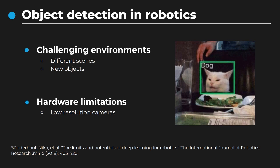Robots, due to hardware space limitations and the requirement to run in real-time, usually cannot use high-resolution cameras, which are not the standard in benchmark datasets. All these factors put constraints on the deployment of deep learning in robotics and require a new approach to deal with these limitations.